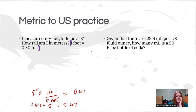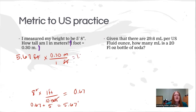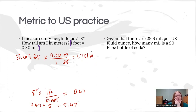Now I take 5.67 feet and use the provided conversion factor: one foot equals 0.30 meters. I put the feet on the bottom and meters on top. So 5.67 times 0.3 is all I have to put into the calculator, which gives a height of 1.701 meters.